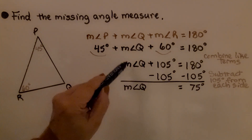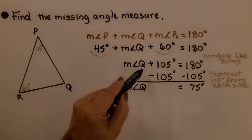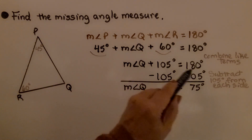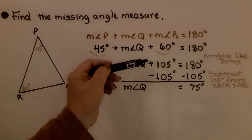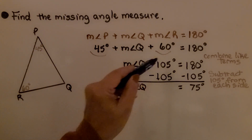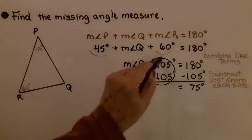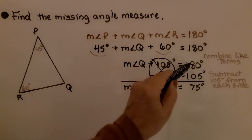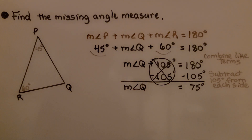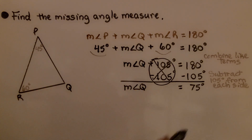We isolate the measure of angle Q by subtracting 105 degrees from each side. We have positive 105 minus 105, which creates a zero pair and eliminates it. 180 degrees minus 105 degrees is 75 degrees. That means the measure of angle Q is equal to 75 degrees.